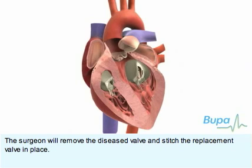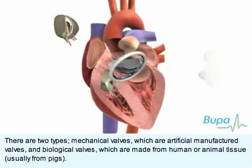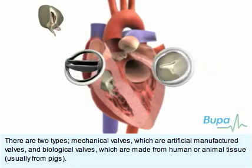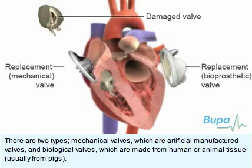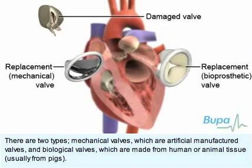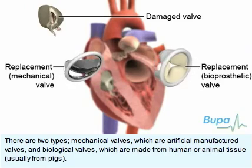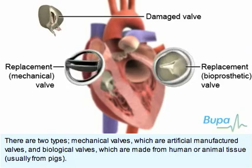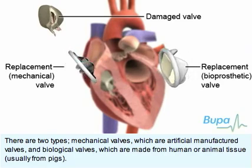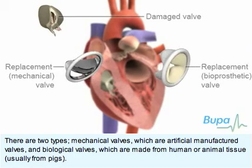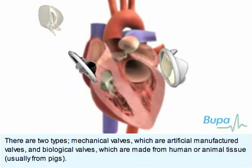The surgeon will remove the diseased valve and stitch the replacement valve in place. There are two types: mechanical valves, which are artificial manufactured valves, and biological valves, which are made from human or animal tissue, usually from pigs.